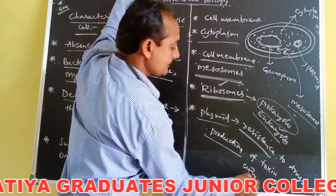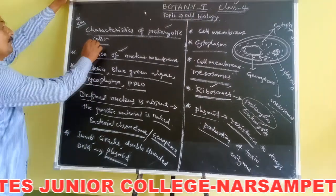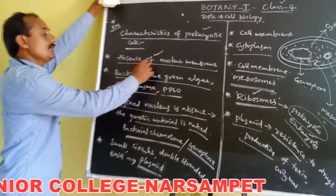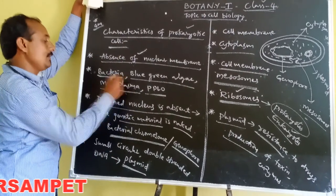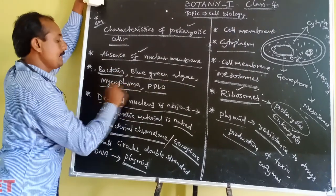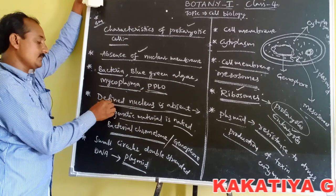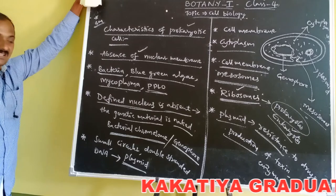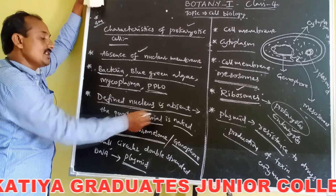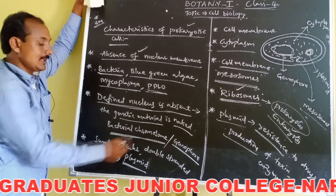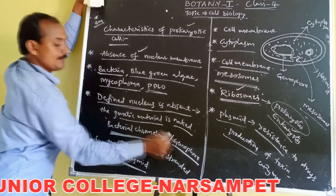These are the characteristic features of prokaryotic cells: absence of nuclear membrane, hence the cells are called prokaryotic cells. Examples are bacteria, blue-green algae, mycoplasma, and PPLO. Definite nucleus is absent, meaning nuclear membrane is absent, and hence the genetic material is naked. The naked main genetic material is called bacterial chromosome or genophore.